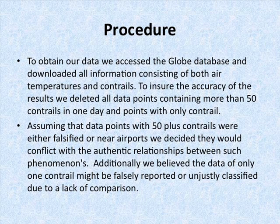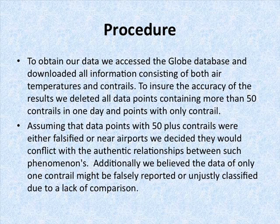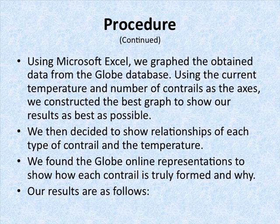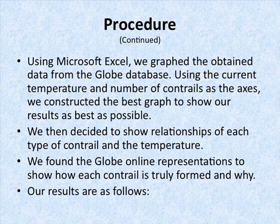We decided those points would conflict with the authentic relationships between such phenomena. Additionally, we believe that data of only one contrail might be falsely reported or unjustly classified due to a lack of comparison. Using Microsoft Excel, we graphed the obtained data from the GLOBE database, using the current temperature and number of contrails as the axes, and constructed the best graph to show our results.